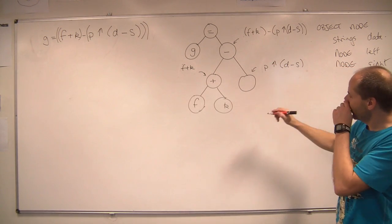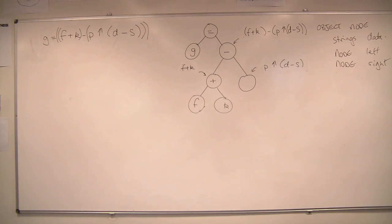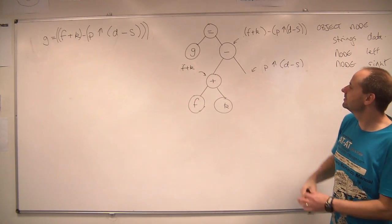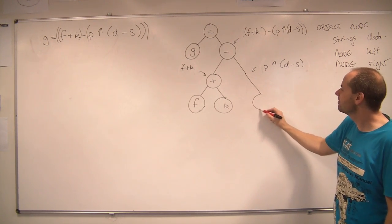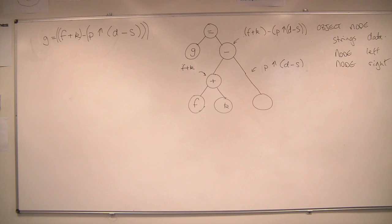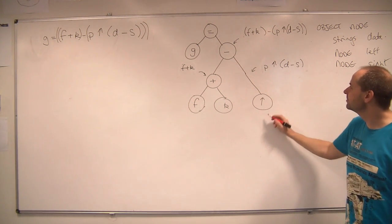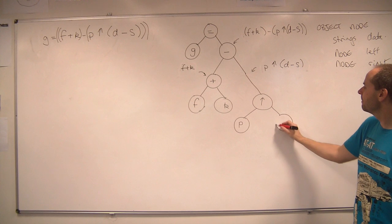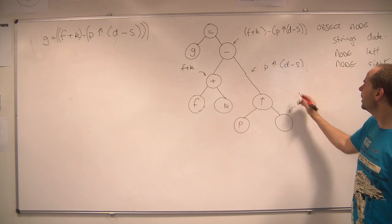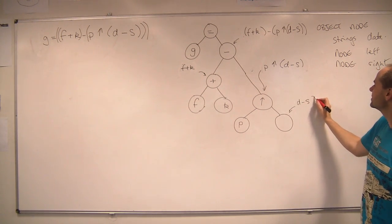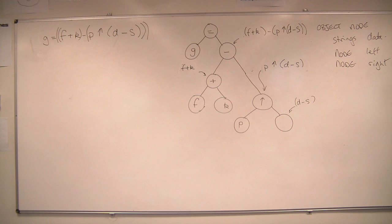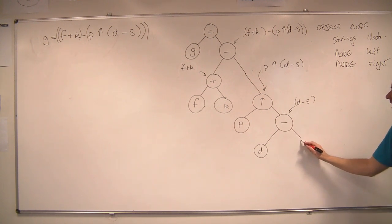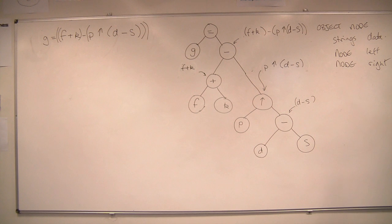So the operator, if we take that bracket out, is power. Drawing these trees is really tricky — I'm going to drag that down a bit so I don't bump into the K. Right, so I'm going to put the power in there. To the left is just a P. But to the right there is a further expression to expand: D minus S. The operator in this case is minus; to the left is D. It's important that you get the left and right the right way around. To the right is S. And that's the expression tree for that expression — that's the first stage.